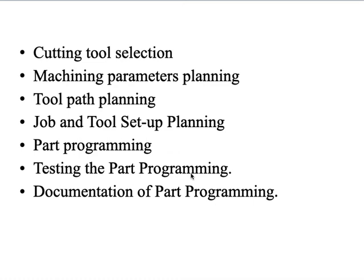Documentation of the part program is an essential aspect of CNC manufacturing. The documentation involves the part drawing, process planning sheet, tool cards, setting cards, and programming sheets. These are all the fundamental parts of manual part programming. So this concludes the overview of manual part programming fundamentals. We'll see the next topic in the next video. Thank you.